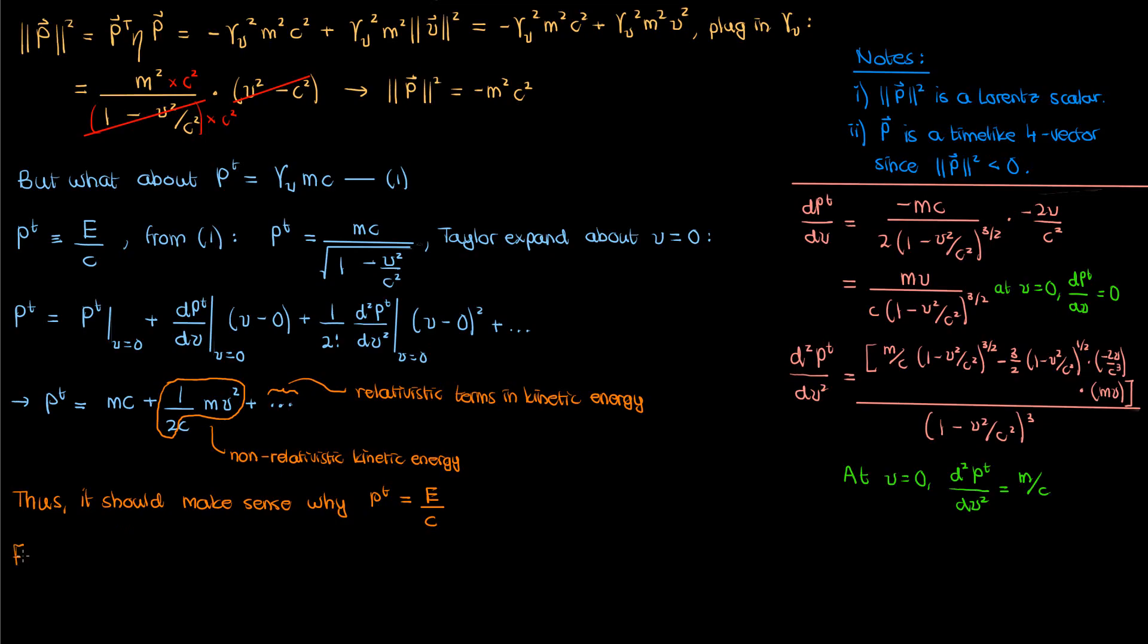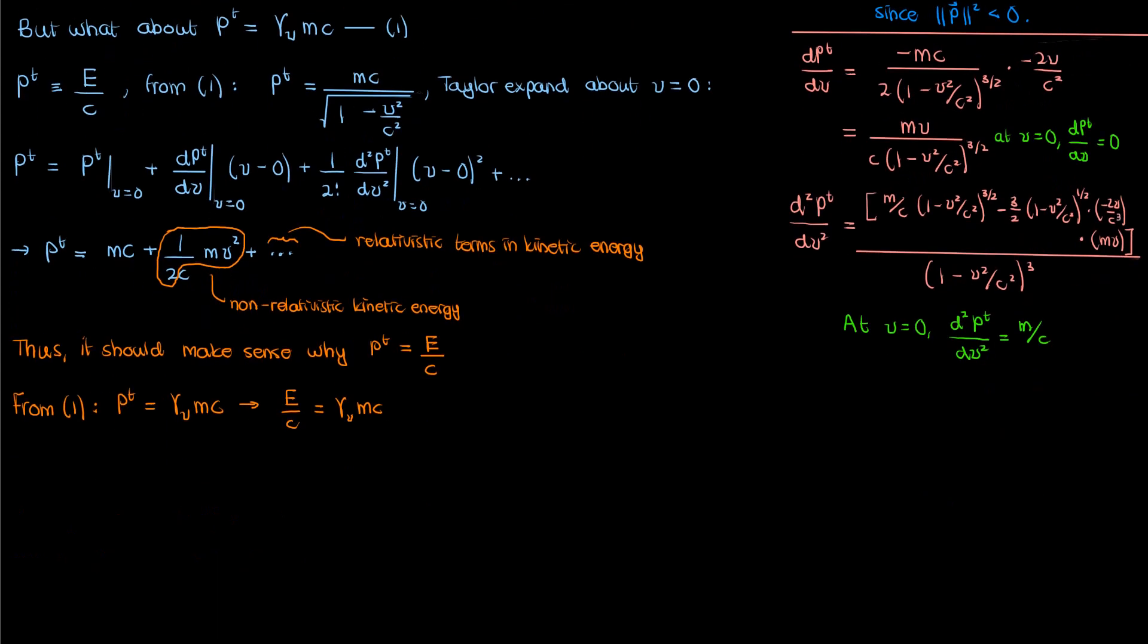So now if we bring back equation 1 and write p^t as E/c instead, this is what we end up with. If we now isolate the total energy and write down our full expression for γ, we end up with this equation for the total energy of a relativistic particle with speed v. I'm going to call this equation 2.